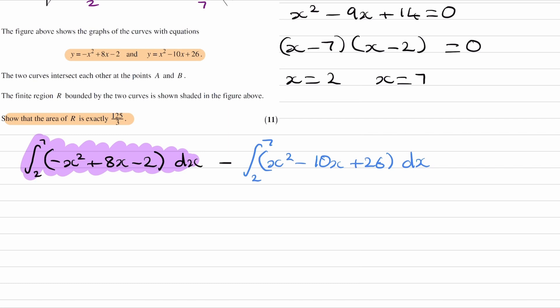So this is the same thing as the integral from 2 to 7 of minus x squared plus 8x minus 2 minus the second term, the x squared minus 10x plus 26.